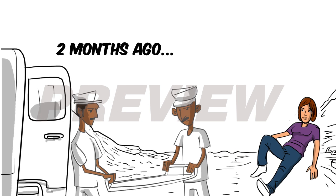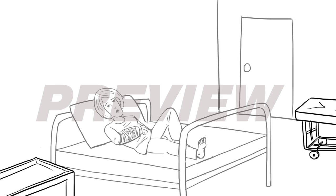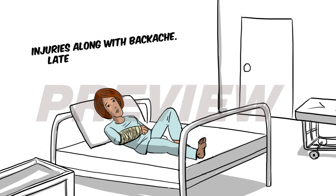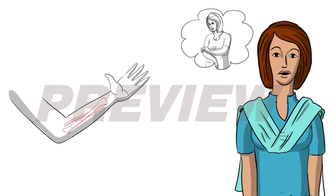Two months ago while biking, she encountered a minor accident that fractured her elbow and caused lower limb injuries along with backache. Later in the hospital, she learned that a minor fall affected her so much because her bones were weak.